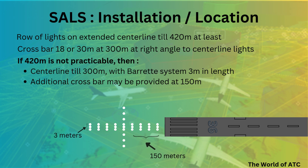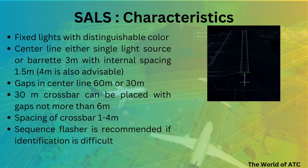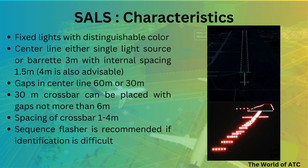Moving on to the characteristics of the Simple Approach Lighting System: it consists of fixed lights with distinguishable colors, and the center line may consist of either a single light source or a barrette system 3 meters in length, with an internal spacing of 1.5 meters. If internal spacing of the barrette is 1.5 meters, that means a total of three lights would be used to make one barrette of 3 meters.